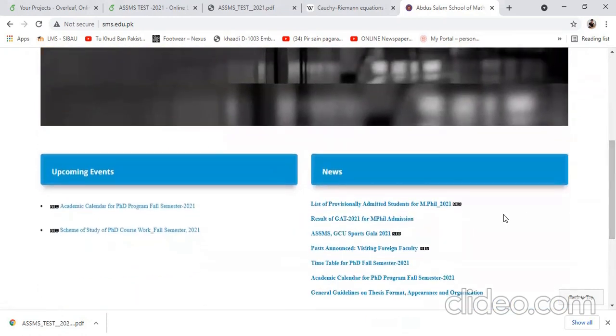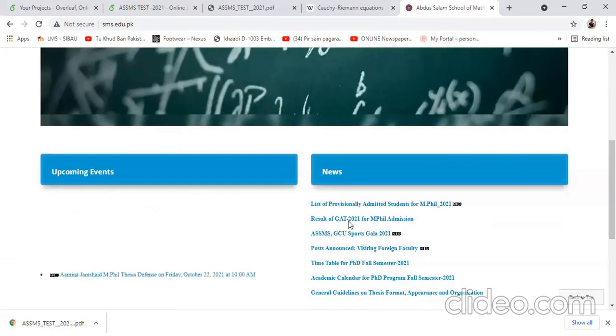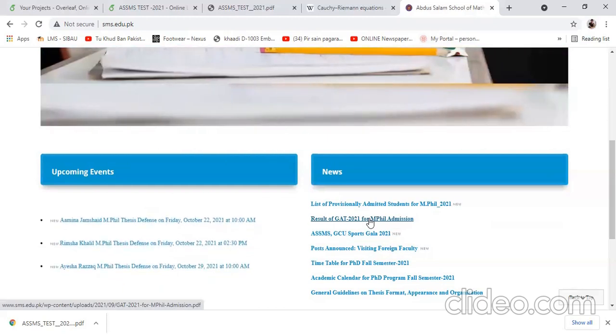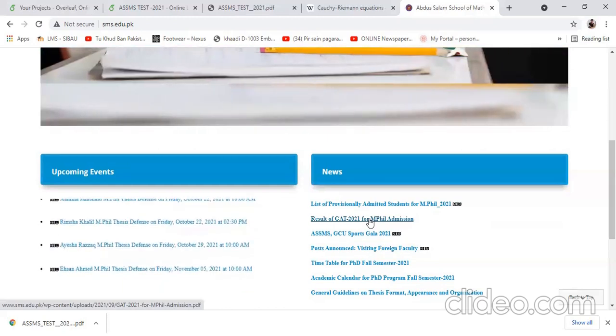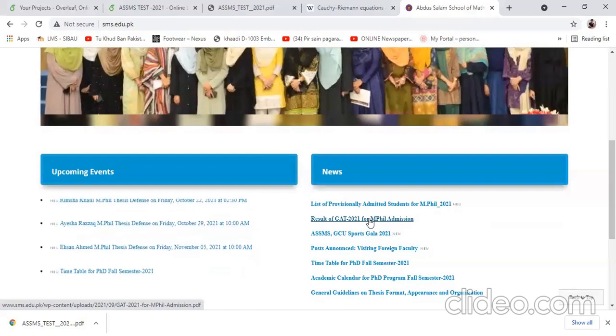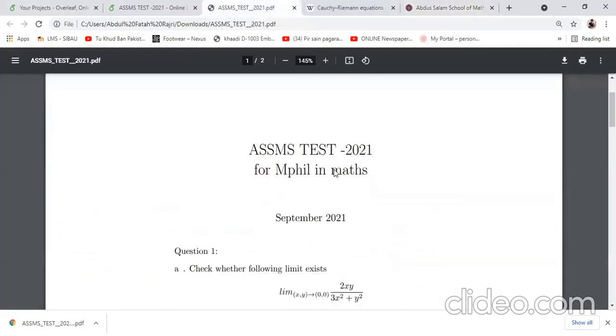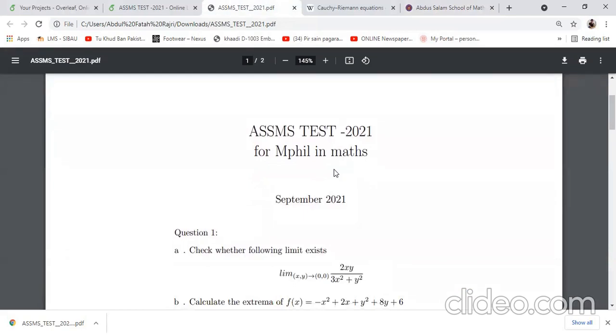They conduct a gate test every year. This year they also took a gate test in 2021. The test was on 4th September 2021. Today we are going to see what was the sample paper and their test. It was SMS test 2021 for M.Phil and math scholarship.